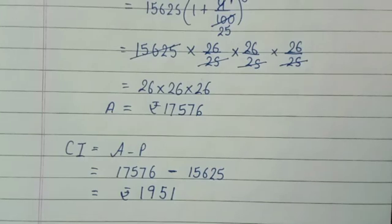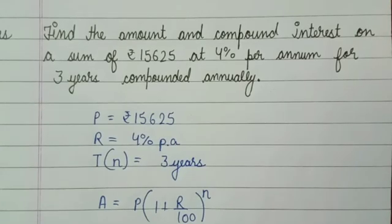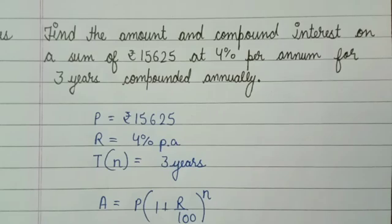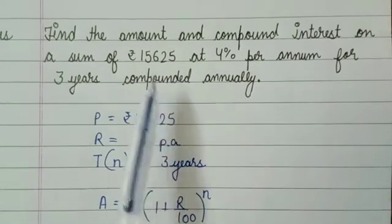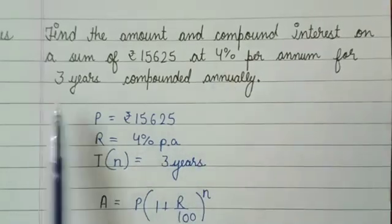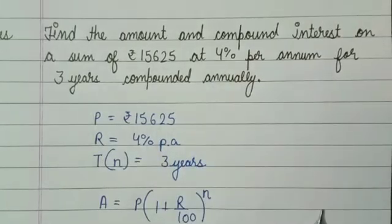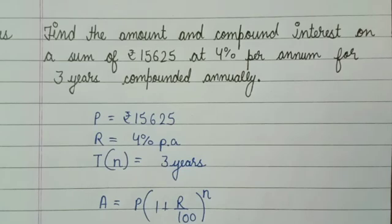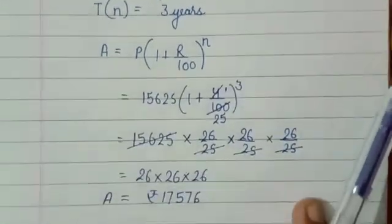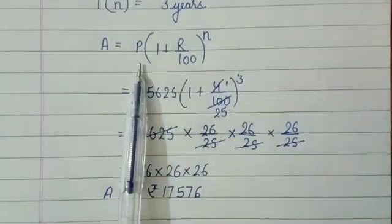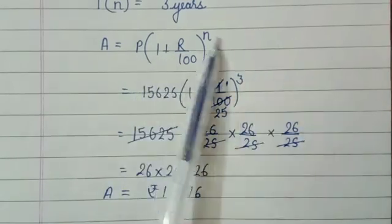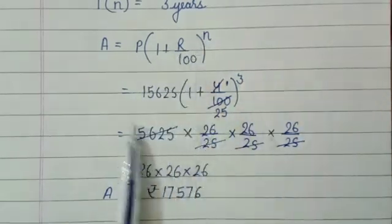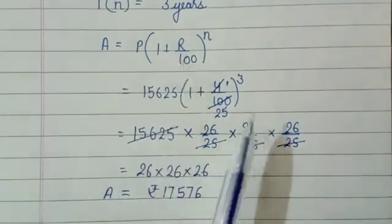So to summarize: we had to find the amount and compound interest, with principal, rate, and time given. We used the amount formula: A = P into (1 + r/100) to the power n. We put in the principal value, r value, and n value.